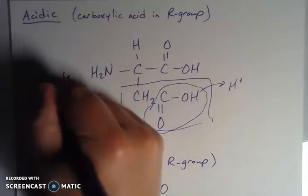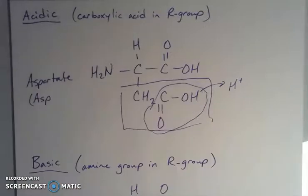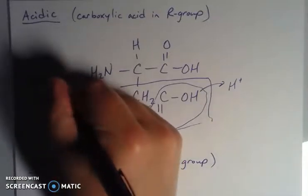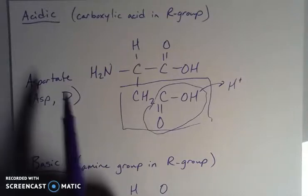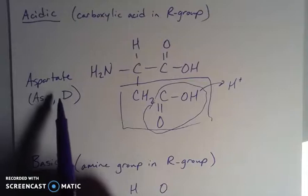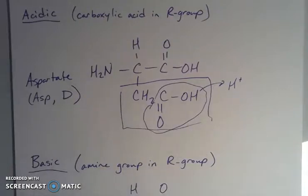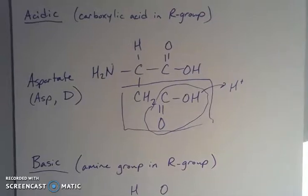This is called aspartate. Its three-letter abbreviation is ASP, like a snake. And the one-letter abbreviation is D, because A was already taken. This is also called aspartic acid because of the carboxylic acid in the R group. But aspartate is the name of the amino acid. So you will see it both ways.